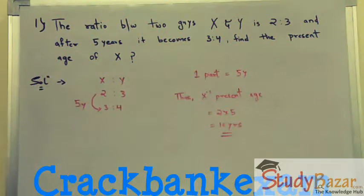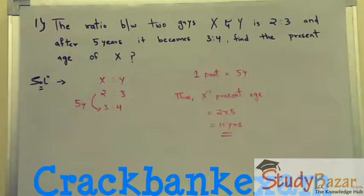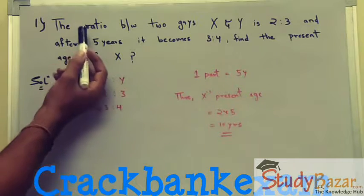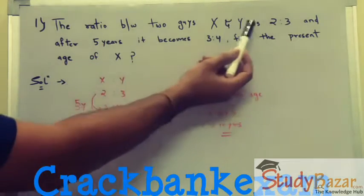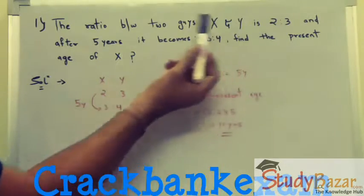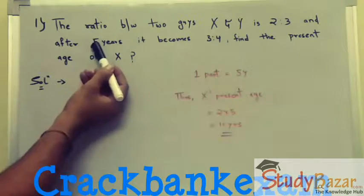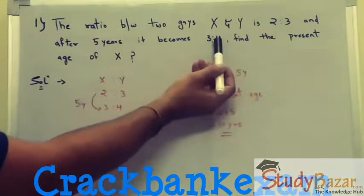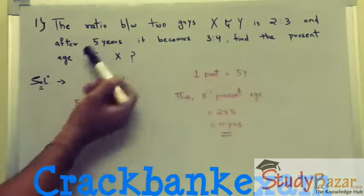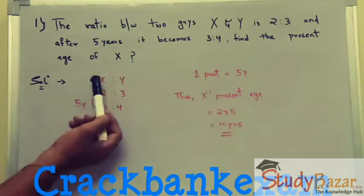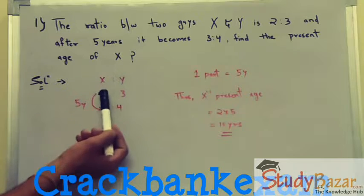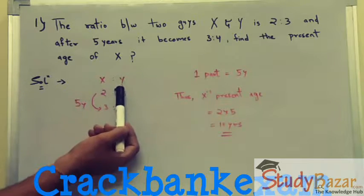Hello friends, today we are discussing problems on ages asked in bank exams like SBI, IBPS, etc. In our first example, the ratio between two persons X and Y is given as 2:3, and after five years it becomes 3:4. We have to find the present age of X.